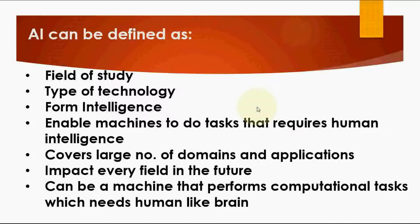AI uses many types of technology, which we will cover in later videos. As a form of intelligence, it copies our behavior and intelligence and provides a new system — it is a totally learned and trained system that mimics human behavior. It enables machines to do tasks that require human intelligence; machines can now think like humans using AI.